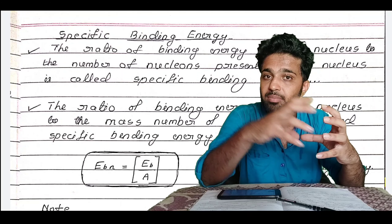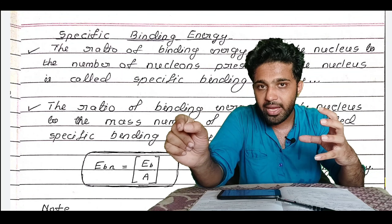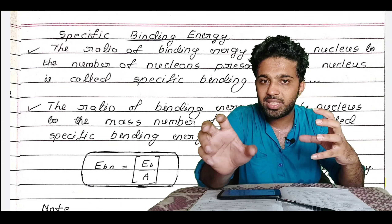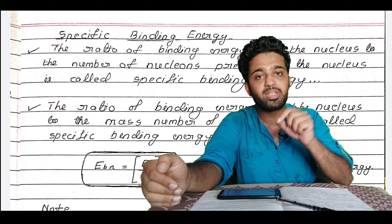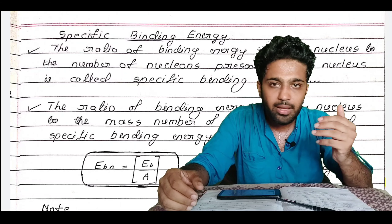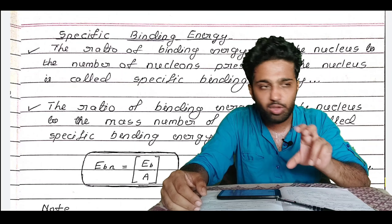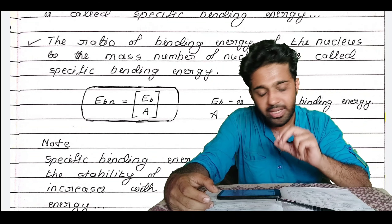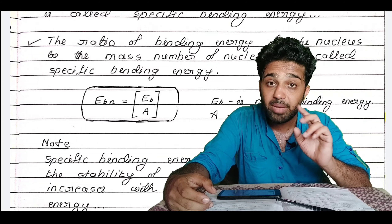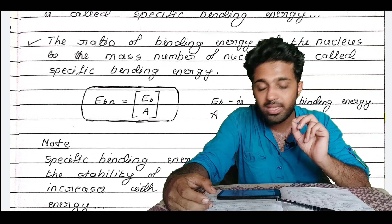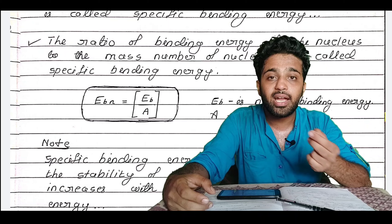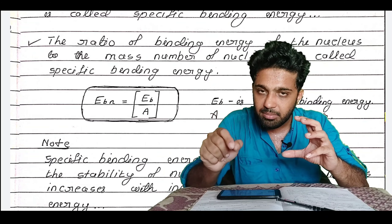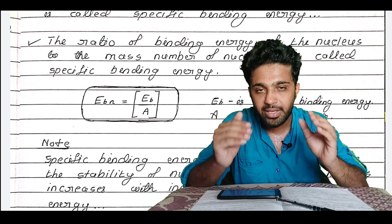The binding energy is calculated and then divided by the mass number — the number of nucleons. That value is called specific binding energy, represented as Eb divided by A. If you calculate binding energy divided by mass number, you get specific binding energy for that particular nucleus.